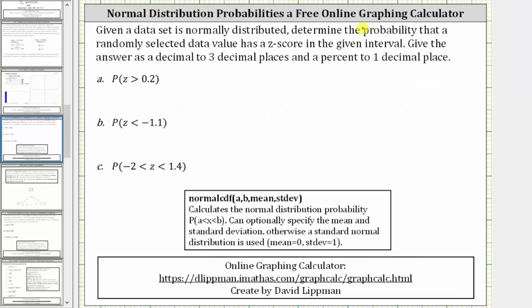When using the free online graphing calculator, we use the notation shown below to determine normal distribution probabilities. We enter normalCDF, and then in parentheses, we have a comma b comma mean comma standard deviation to determine the probability that x is greater than a and less than b. The mean and standard deviation are optional. If we leave those off by default, the mean is zero and the standard deviation is one, which means the x-value would be a z-score, which is our case.